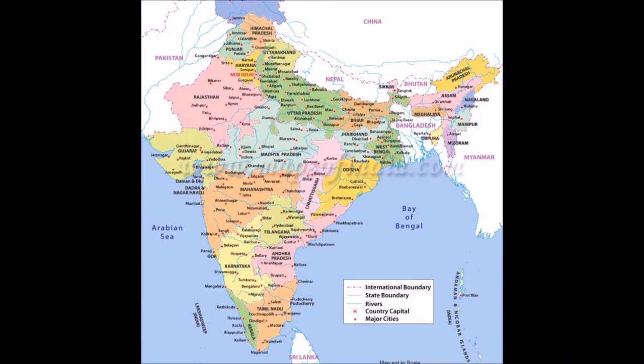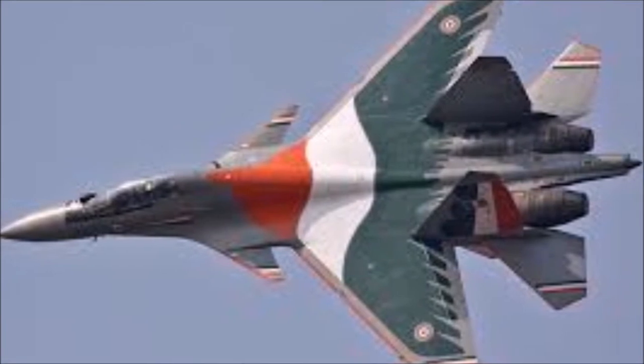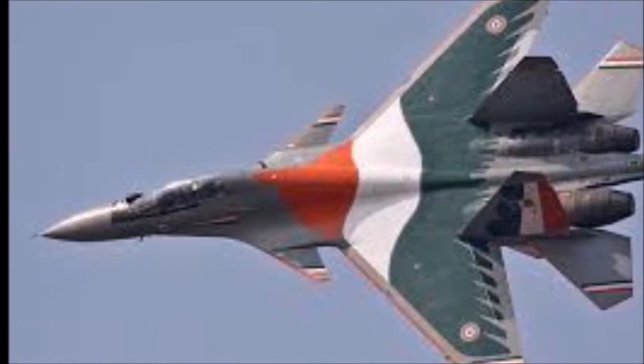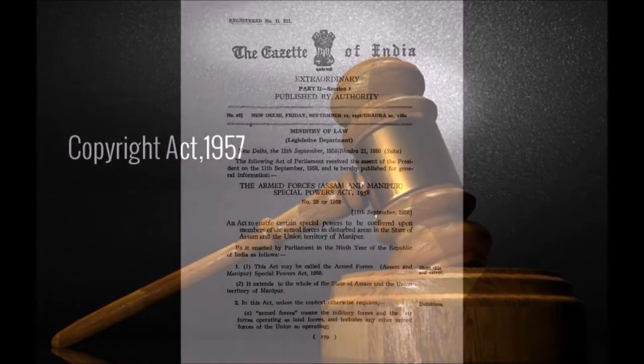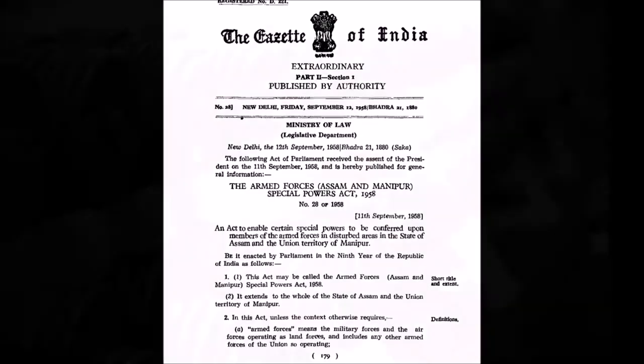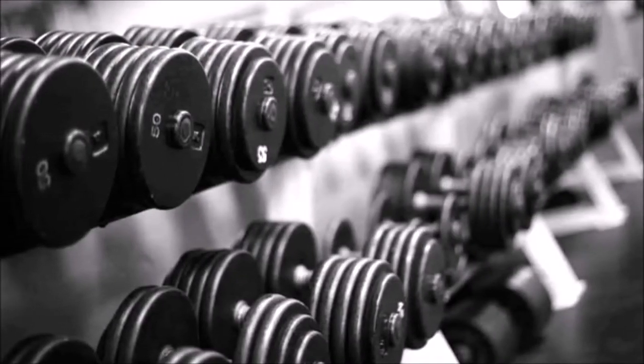1956: B.R. Ambedkar converted to Buddhism and the states were reorganized. 1957: India passed a bill making Kashmir part of the Union. Parliament also passed the Copyright Act of 1957. 1958: The Armed Forces Act was passed by the government, and the standards of weights and measures took effect.